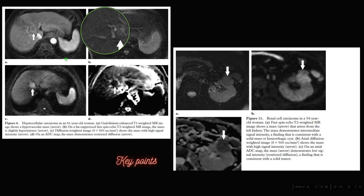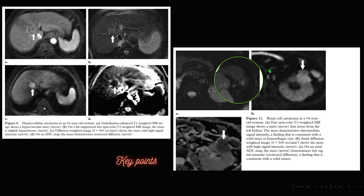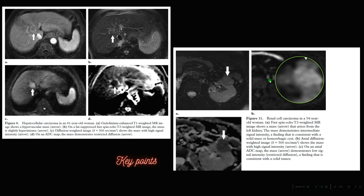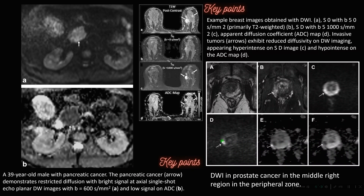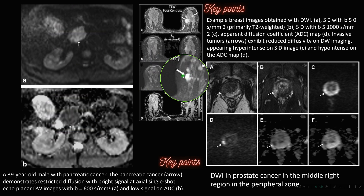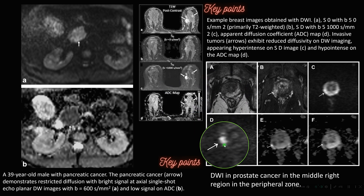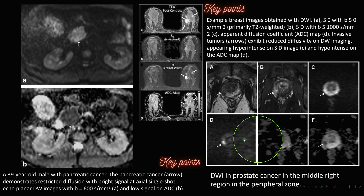DWI also helps in identifying hepatocellular carcinoma — this was a case of HCC showing restricted diffusion on DWI with low ADC values. DWI helps in identifying RCC as well, showing restricted diffusion with low ADC values. DWI helps in identifying pancreatic carcinoma showing restricted diffusion with low ADC values. In the breast, restricted diffusion with low ADC values was seen in a case of breast carcinoma. This was a case of prostatic carcinoma showing restricted diffusion in the peripheral zone with low ADC values.